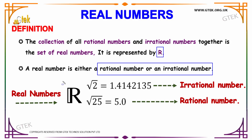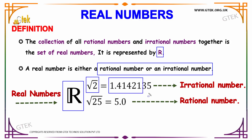Let's see some examples of what real numbers are all about. As we have seen, the representation is capital R. Root 2 — the value of root 2 is 1.414 and it goes on. Since the value is going to be repeating, it's an irrational number.